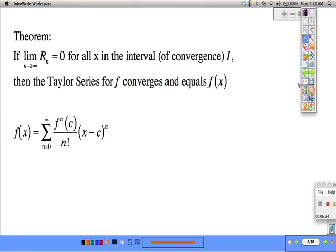The theorem says that if the limit of this remainder equals 0 for all x in the interval of convergence, then the Taylor series for f converges and equals f of x.